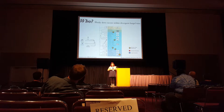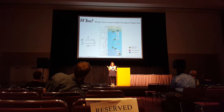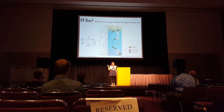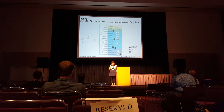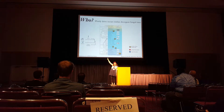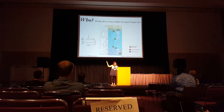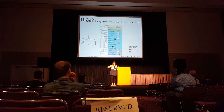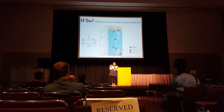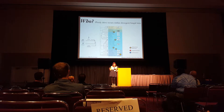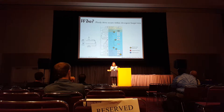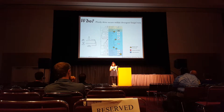Ploidy drive occurs throughout diverse fungal taxa — the yellow stars indicate the taxa we've observed it in. For scale, here are some of our favorite organisms like Saccharomyces and Candida. These are really diverse fungal taxa, and even though to my eyes they look really similar, evolutionarily they're not. So this seems to be a conserved phenomenon among fungi.